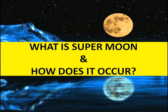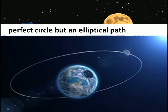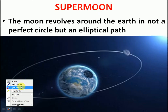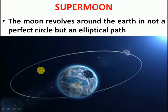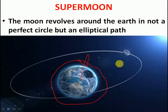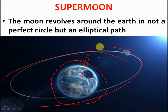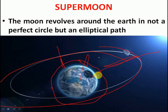First of all, we will discuss what a supermoon is and how it occurs. As you know, the moon revolves around the Earth in an elliptical path, not a perfect circular path. Due to this elliptical path, the distance of the moon from the Earth varies — it appears closer at some points and farthest at others. The farthest point from the Earth is called apogee, and the closest point is called perigee.